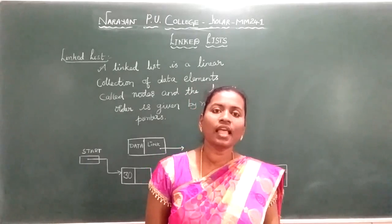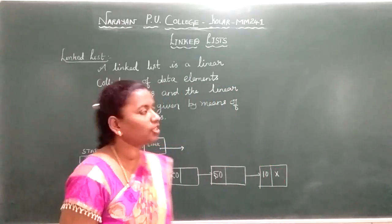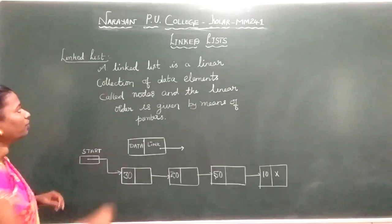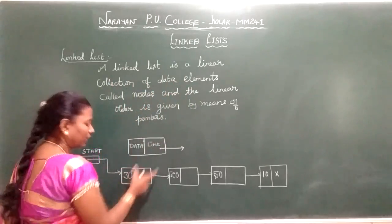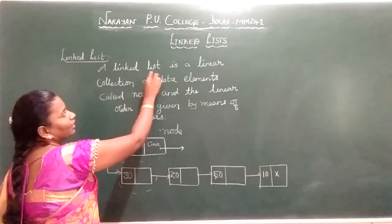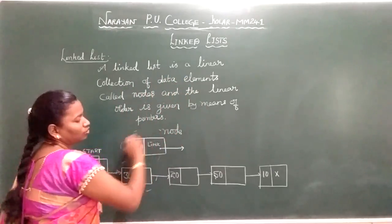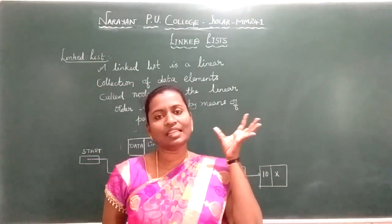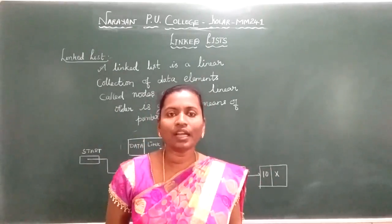I will explain the definition of linked list, then we will see types of linked list, then algorithms. A linked list is a linear data structure — a linear collection of data elements called nodes. The linear order is given by means of pointers. Each and every node is connected with the next through a pointer. Our node contains two parts.